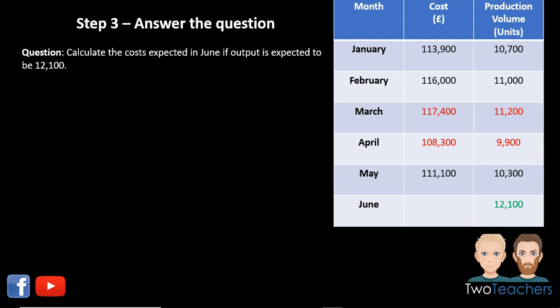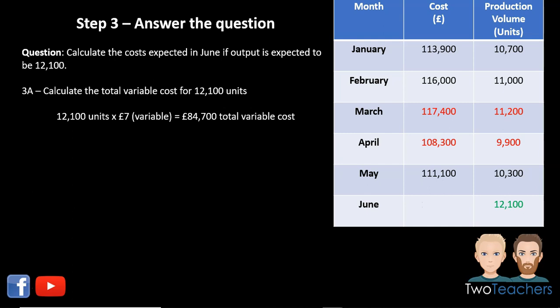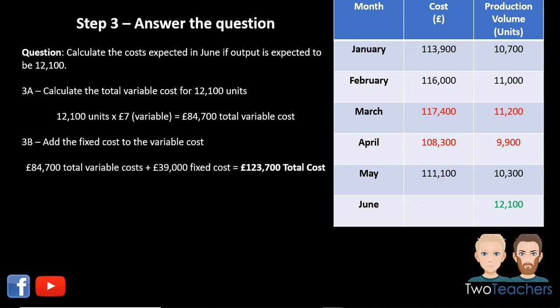We know each unit costs £7 to produce for the variable element, so we calculate the total variable cost for 12,100 units in June: 12,100 units multiplied by £7 gives a total variable cost of £84,700. Next, we add the fixed cost from step two, which was £39,000, giving a total cost of £123,700.